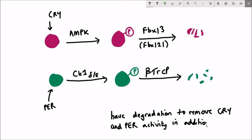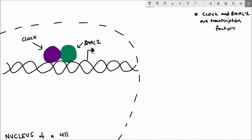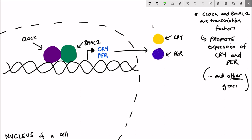This protein degradation acts in addition to the repression of gene expression that we saw earlier to make sure that both period and cryptochrome levels decrease before they then increase during the next cycle of the circadian rhythm.